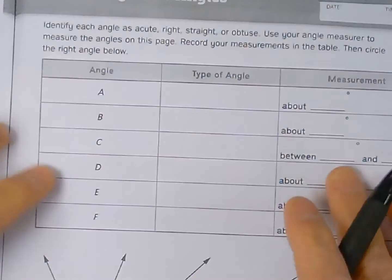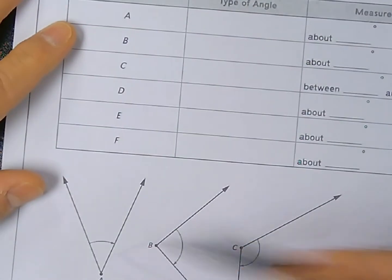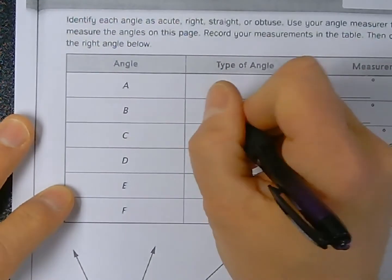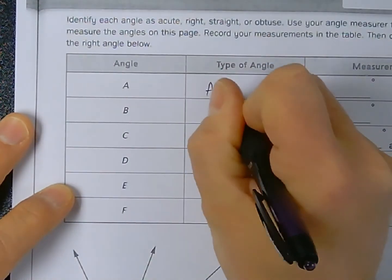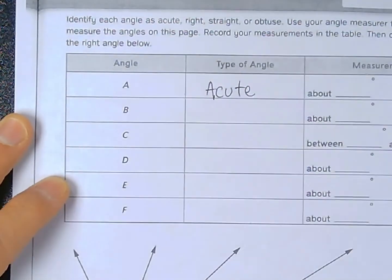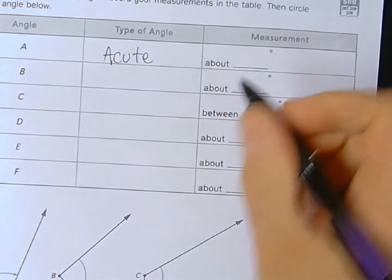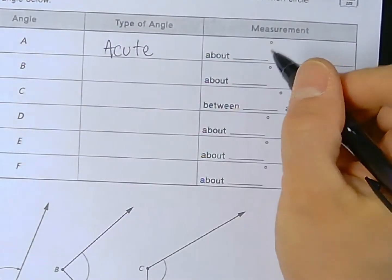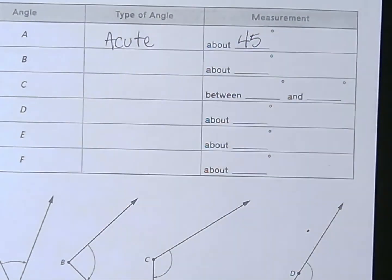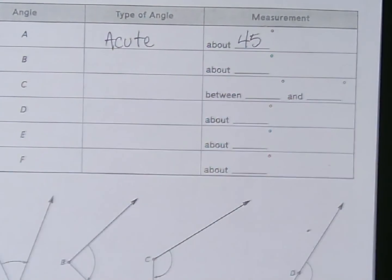So when I go to fill this in, this angle, which is less than 90 degrees, would be acute. So in this box right here, I would just write, it is acute. Oh, look at it, it's so little, it's so cute. That's how I remember that phrase. And then I would put in the measurement, it's about 45 degrees. Now, if you measure this from home and you get like 43, 44, or maybe even 46, that's okay. We're learning how to use this tool.